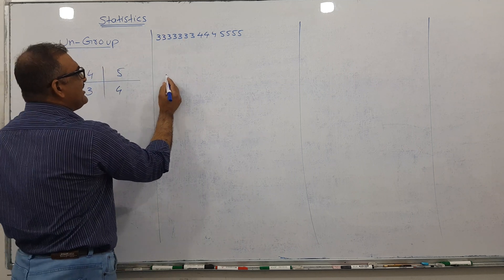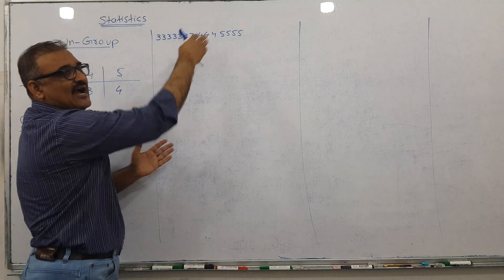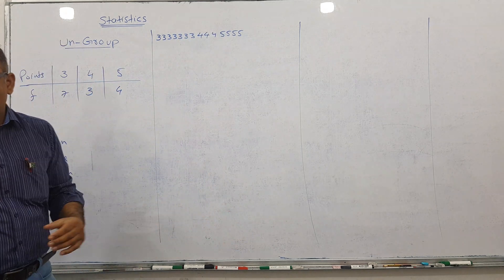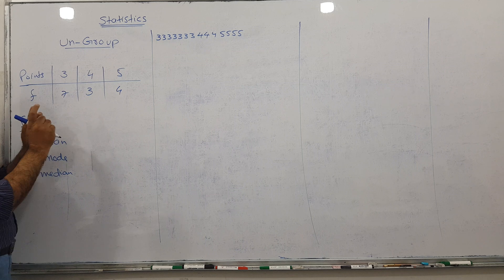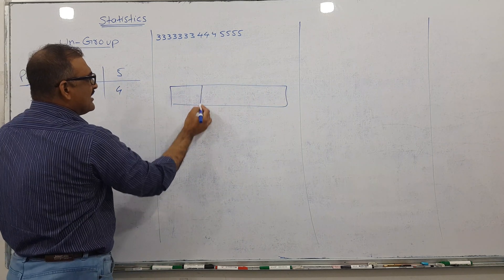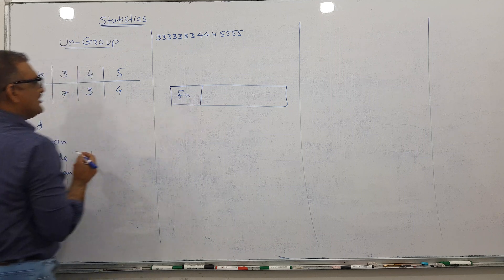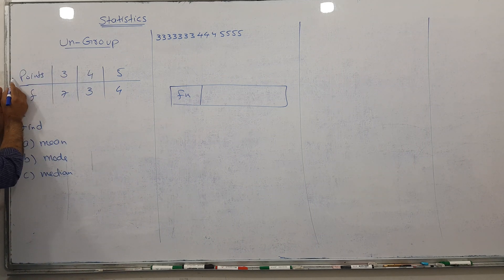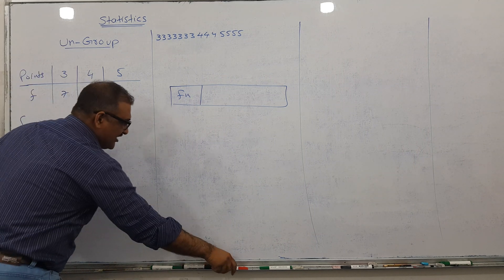To find the mean, normally you add them all. But we have a special technique: I will make one extra column called FX. F represents frequency and X represents the value.